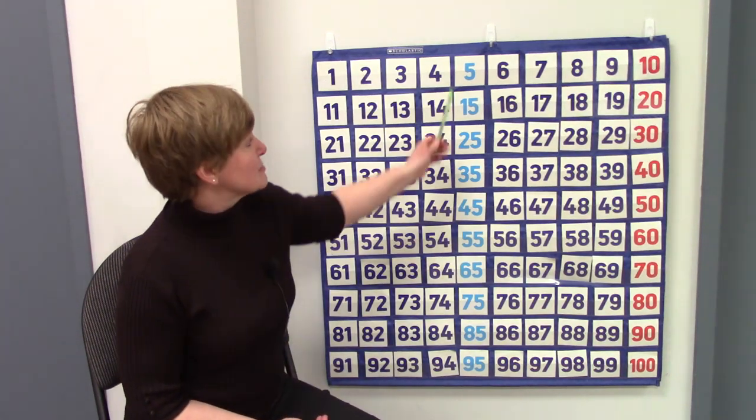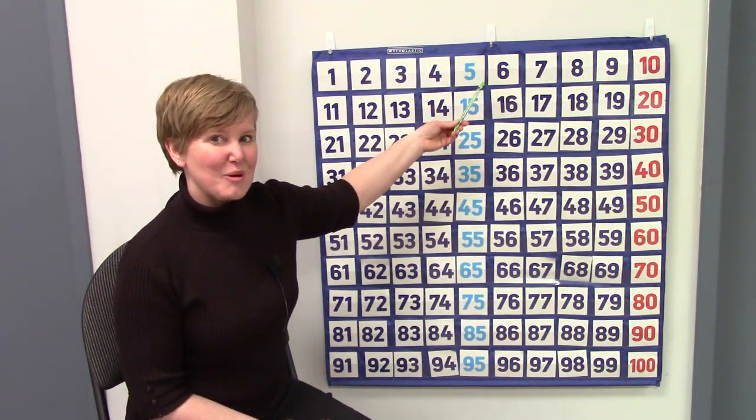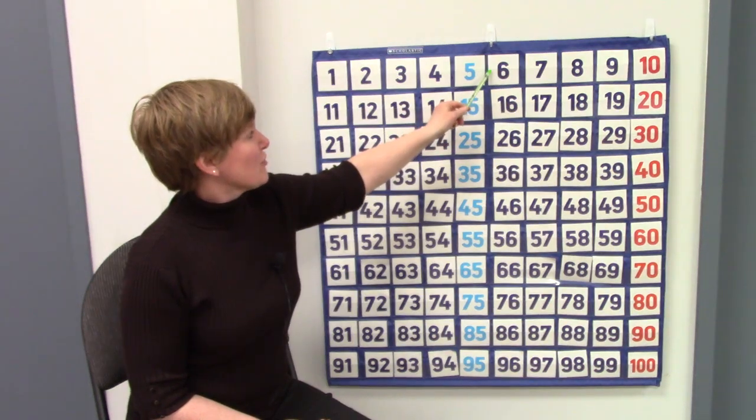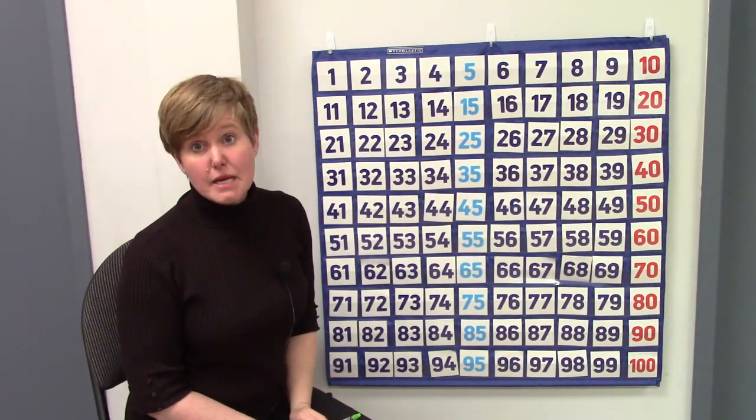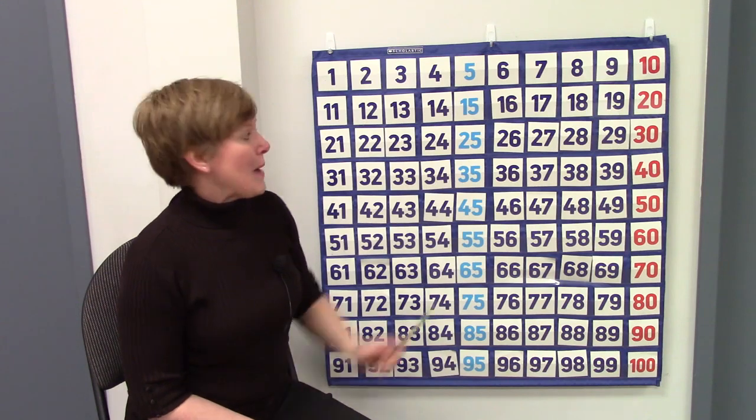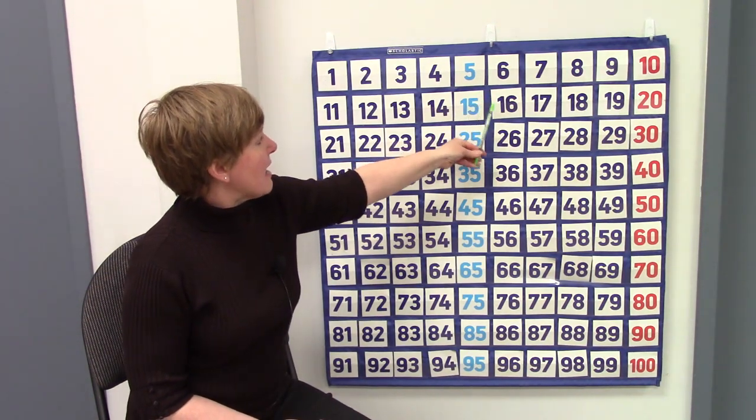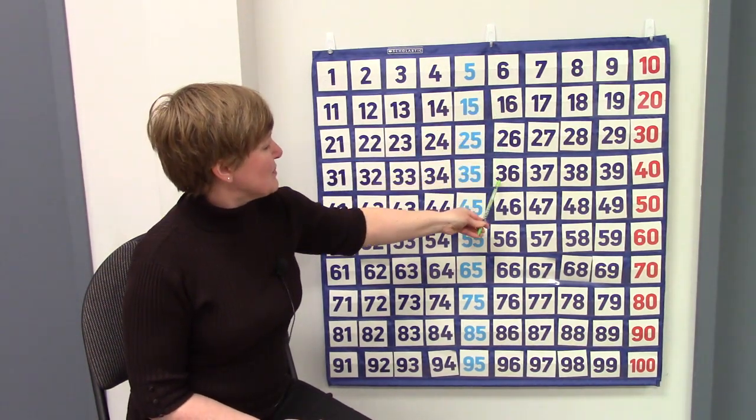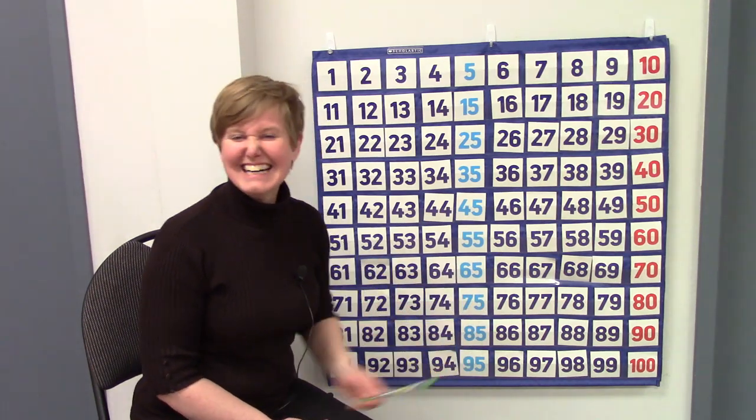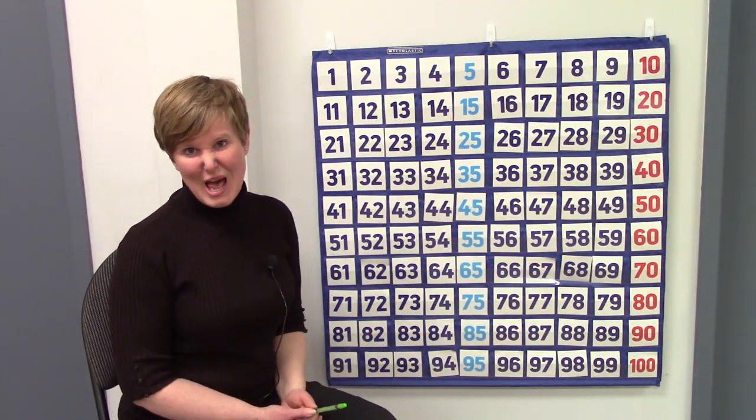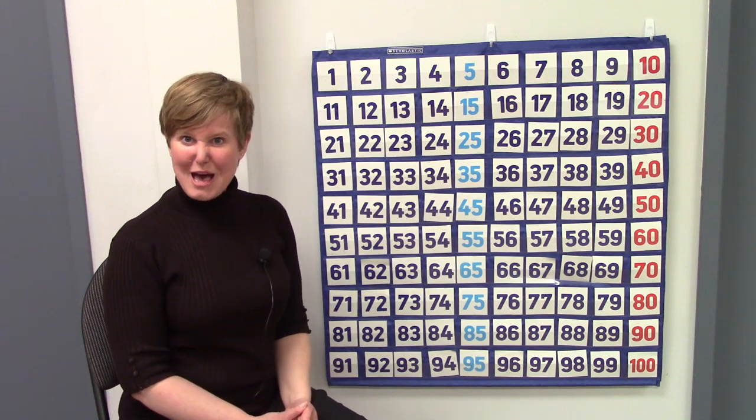And all of the numbers that are in the tens place, they follow a pattern. In the very first one, 6, there isn't a number in the tens place. But look! Then we have a 1, then 2, 3, 4, 5, 6, 7, 8, 9. The numbers in our ten place follow a pattern.